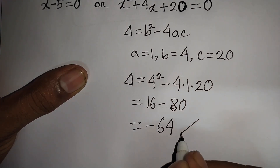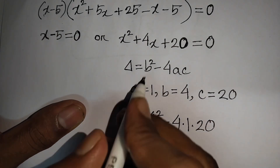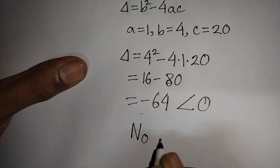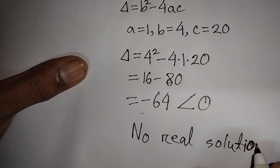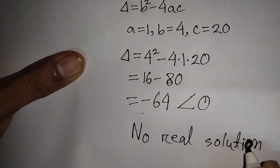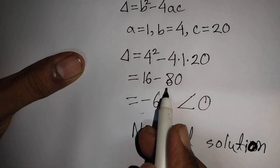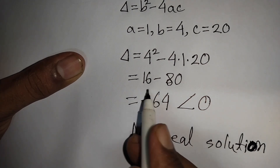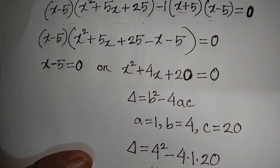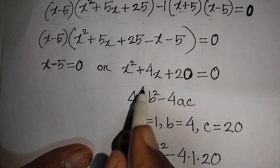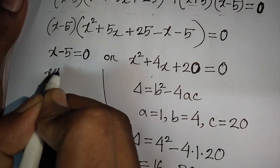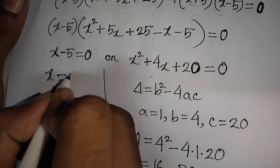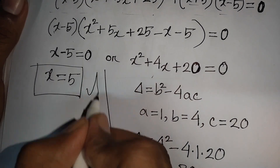16 minus 80 equals minus 64. Since minus 64 is less than 0, meaning b² minus 4ac is less than 0, there is no real solution from the quadratic. So our final answer is x equals 5, taking minus 5 to the right side gives plus 5.